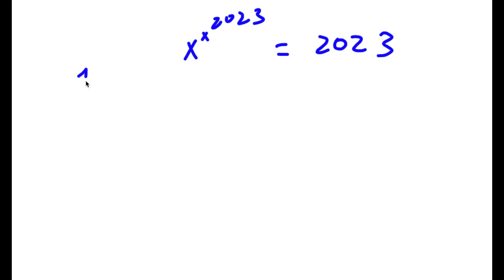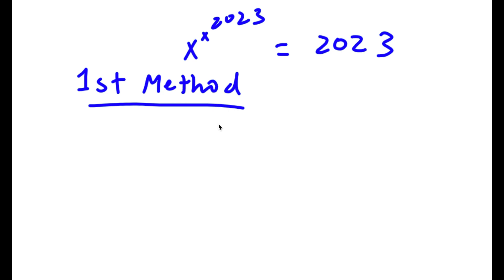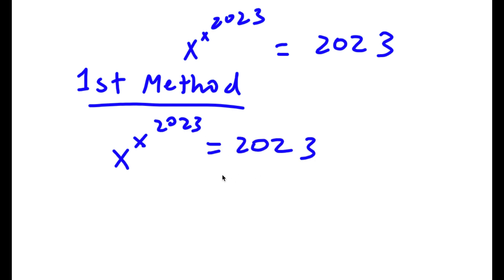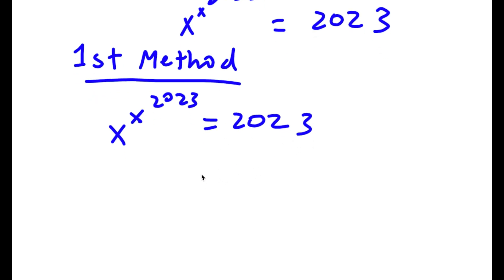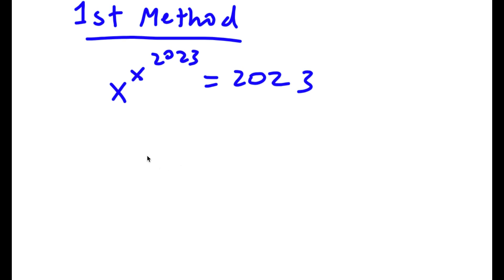So the first method — we start by having x to the power of x to the power of 2023 is equal to 2023. Now I'm going to set x to the power of 2023 equal to the variable y.